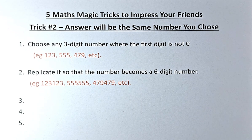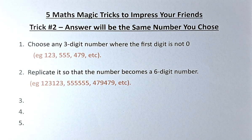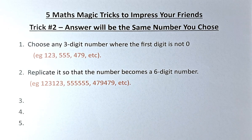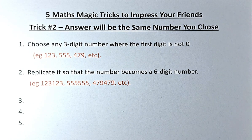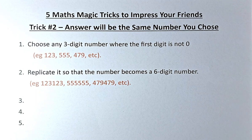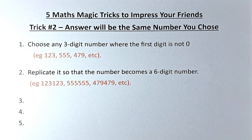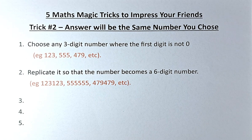Next, you are going to replicate that number so that it now becomes a six-digit number. So for example, if you choose 123, your number now in your calculator will be 123123. If you have 555, you repeat again, it becomes 555555. If you chose 479, then it becomes 479479. So have you chosen your number and replicated it? Yes!